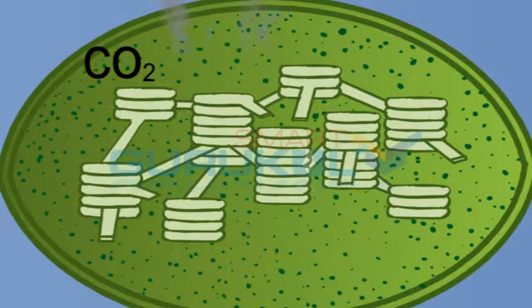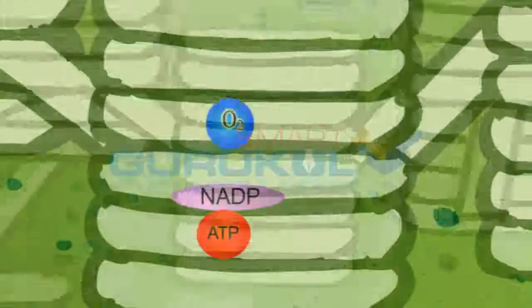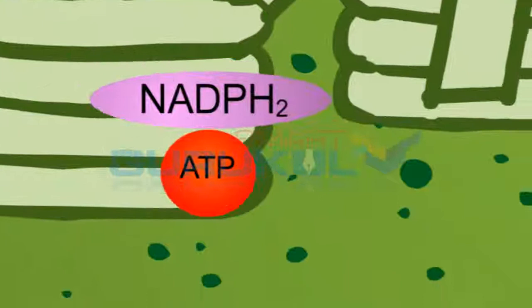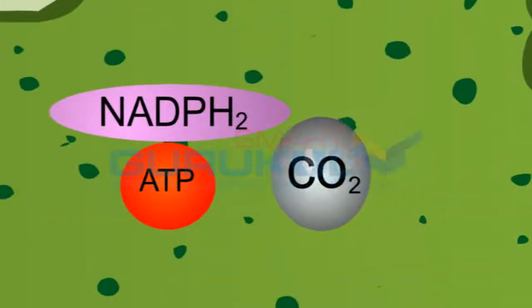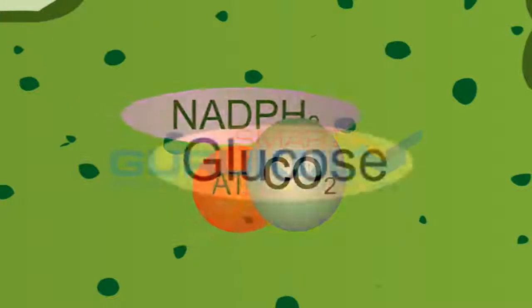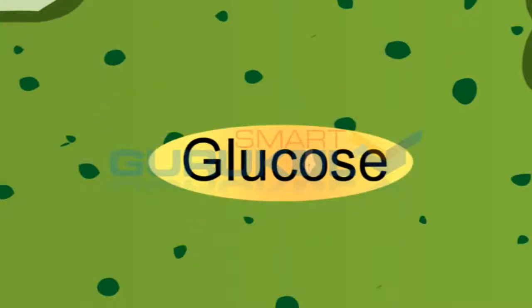CO2, in the presence of ATP and NADPH2 which is produced in the light reaction, is utilized for the production of glucose, which is a carbohydrate.